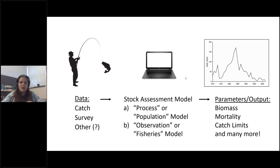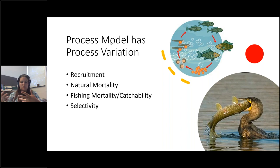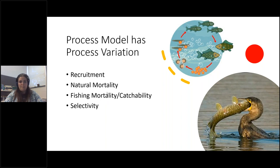Both sub-models are inherently variable and subject to error. The process model has what we call process variation — underlying population metrics like recruitment, natural mortality, fishing mortality, and selectivity will vary across time, place, and age due to environmental variability. Some years recruitment will spike because of a perfect storm of conditions; sometimes natural mortality will be really high because of a predation event or a heat wave.